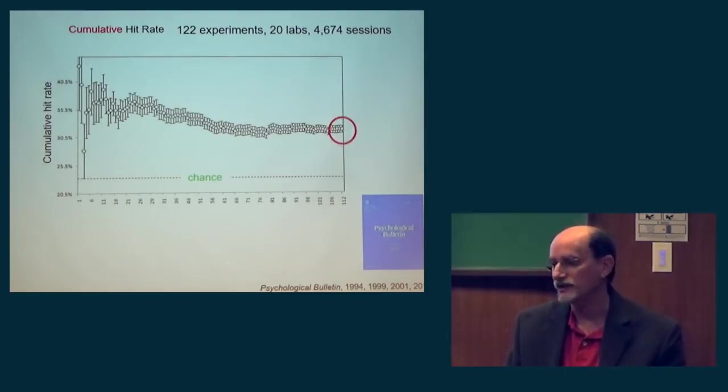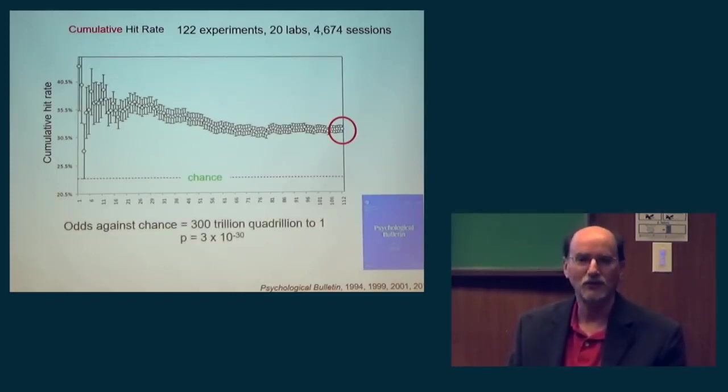You can see much more clearly that we're not regressing to the mean of chance at 25%, but we're actually going to 32%. You do the statistics on the likelihood of being at 32%, where chance is 25%, the answer is odds against chance of 300 trillion quadrillion to 1, or 10 to the minus 30th. This has been discussed many times in one of the top academic psychology journals, Psychological Bulletin. If any academic psychologist says there's no evidence for psychic phenomena, it means they're not reading their own journals.